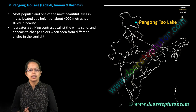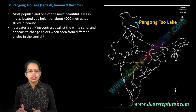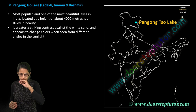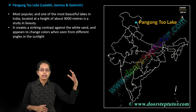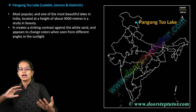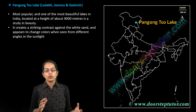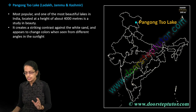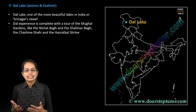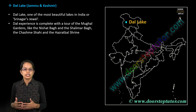Coming to the lakes, the first important lake is Pangong Lake, located in the Ladakh area. It's important because light falling from different angles produces different colors, creating striking contrasts. The next is Dal Lake, located in Kashmir.